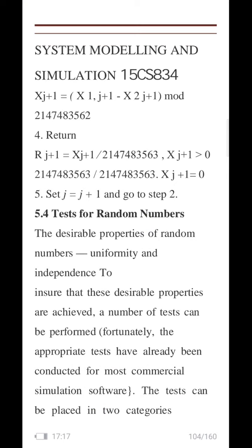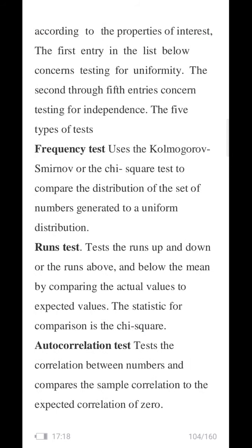The desirable properties of random numbers are uniformity and independence. To ensure that these desirable properties are achieved, a number of tests can be performed. The tests can be placed in two categories according to the properties of interest. The first category concerns testing for uniformity, and the second through fifth entries are concerned with testing for independence. So the first four categories belong to testing for uniformity and the last one, the fifth, belongs to testing for independence.